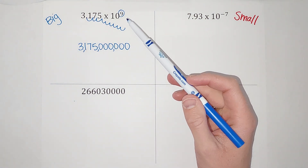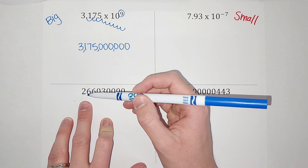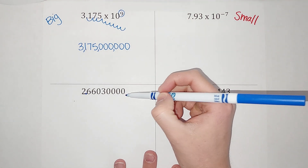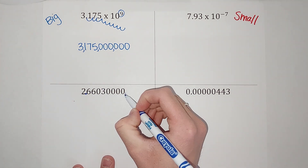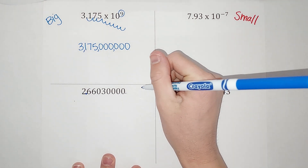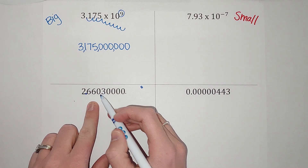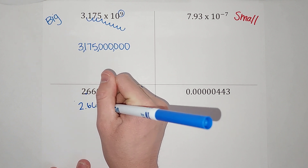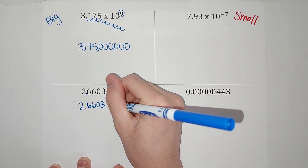Now let's take one that's in standard notation and turn it into scientific notation. For scientific notation, we want one number in front of our decimal point — so we want our decimal point to be right here, but that's not where it started. Our decimal point was over here, so we need to count how many times we moved it: one, two, three, four, five, six, seven, eight places. I'll write a little eight to remind myself. Then we write the digits that aren't zero — 2.6603.